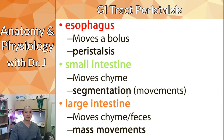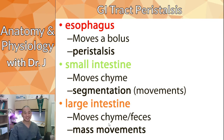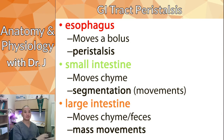This stop-and-go pattern is what we call mass movements. It's peristalsis, but compared to something continuous or back-and-forth, it takes a break then goes. It's like commuting from Ewa to Honolulu in the morning — stop-and-go traffic. Movement, then stops, movement, then stops. That's what the large intestine does.